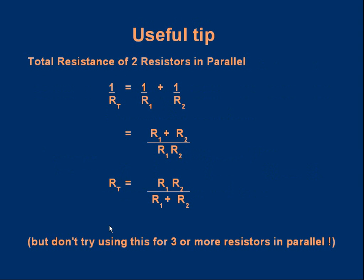Another tip: for two resistors in parallel, you can find the total resistance quickly by multiplying the two resistors together and dividing by their sum — that is, RT = (R1 × R2) / (R1 + R2). That's a quick method for two resistors in parallel, but it does not work for more than two. You cannot multiply R1 × R2 × R3 and divide by R1 + R2 + R3 — the algebra is not right.